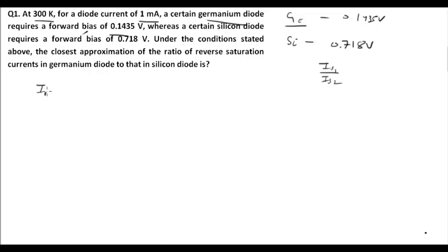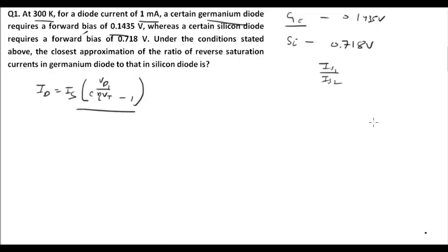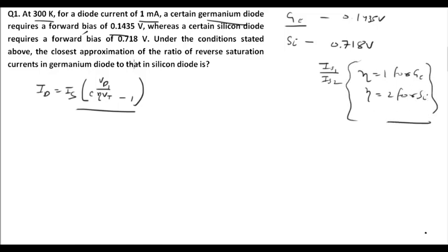The diode current equation is: Id = Is × (e^(Vd / (η·Vt)) − 1), where η is the ideality factor. η = 1 for germanium and η = 2 for silicon. Remember this — it is very important. We begin by solving for germanium.